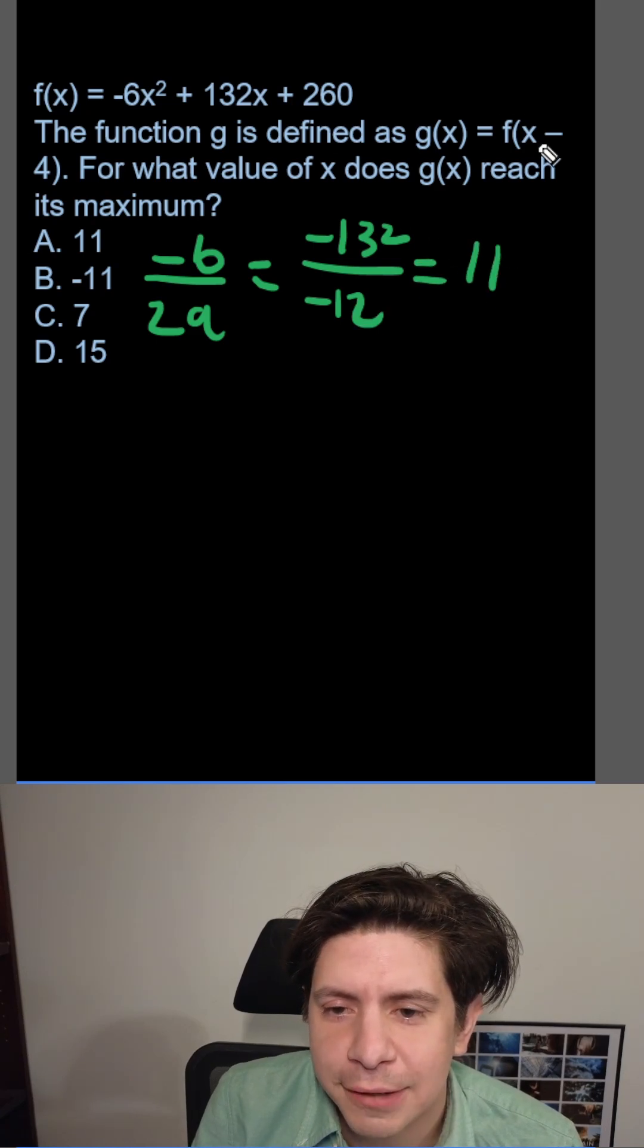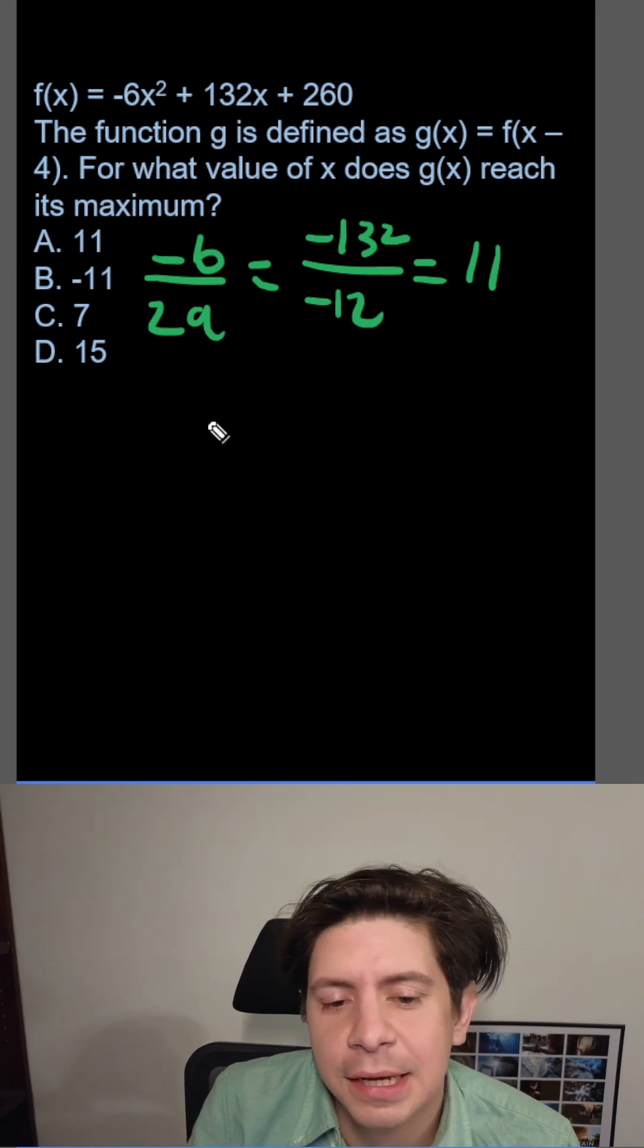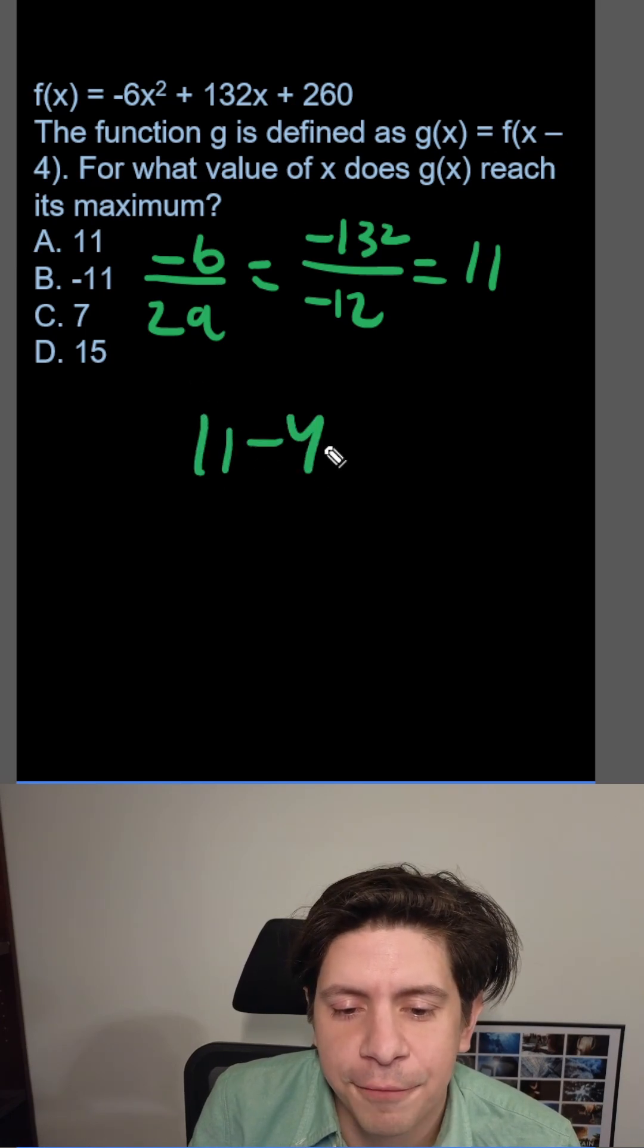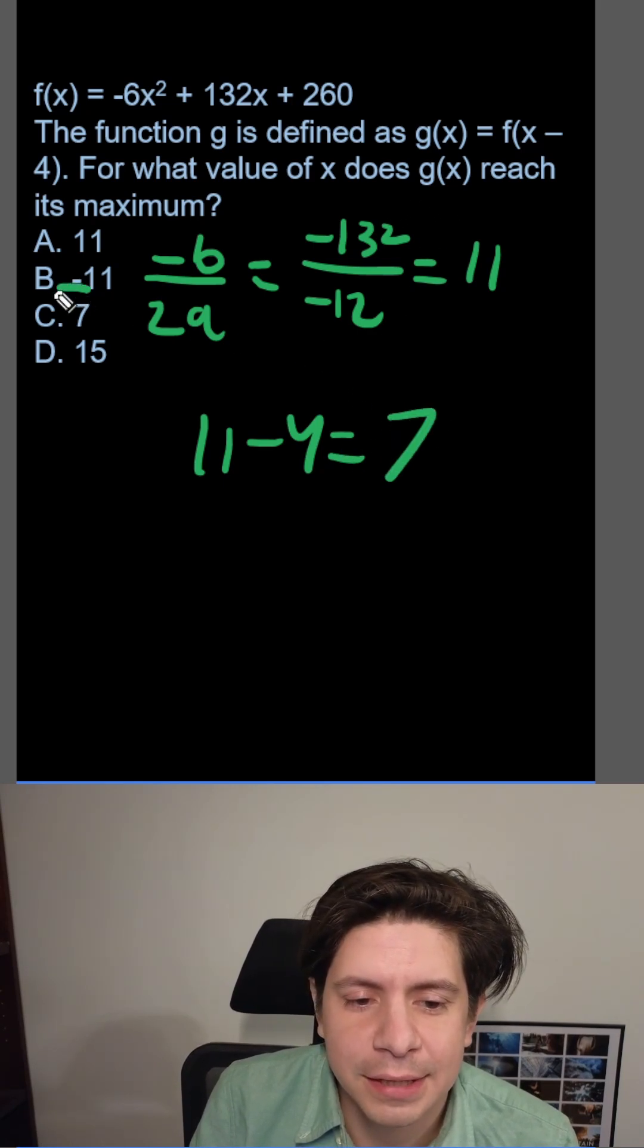And then there's a shift 4, minus 4 is a shift 4 to the left, and we're going to do 11 minus 4, it's going to be 7. So the x value for g(x) when it reaches maximum is 7.